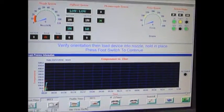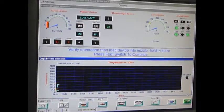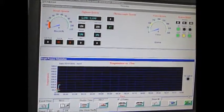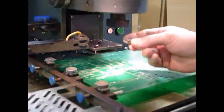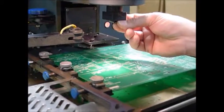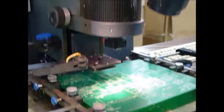We're going to press the foot switch to turn the vacuum onto the nozzle. There, you can hear the vacuum turned on for the nozzle. We're going to place the 44 pin PLCC on the nozzle, center it up, press the foot switch.